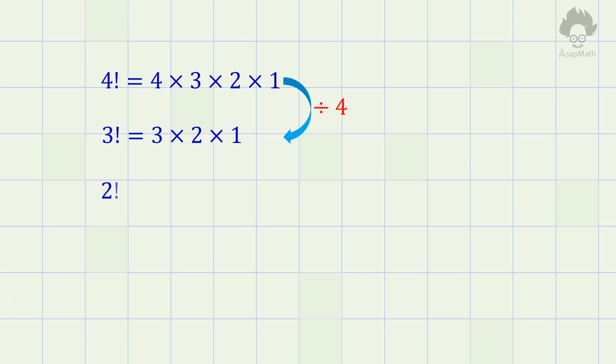Factorial 2 is equal to 2 times 1. Can we obtain factorial 2 from factorial 3? Yes, we can. If we divide factorial 3 by 3, we can obtain factorial 2.